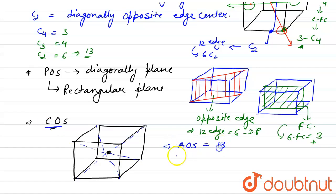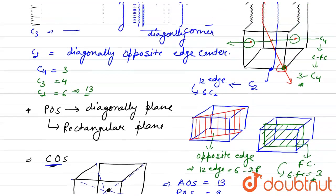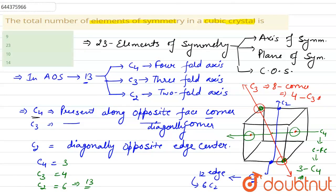So axes of symmetry are 13, planes of symmetry are 9, and center of symmetry is 1, giving a total of 23 elements of symmetry. On the basis of this discussion, our answer is 23. Thank you so much.